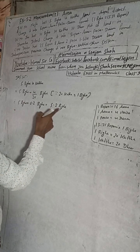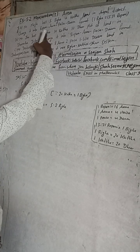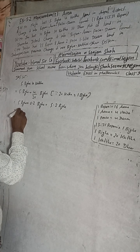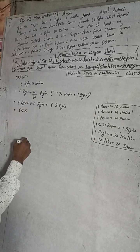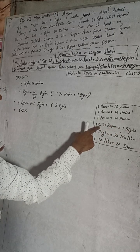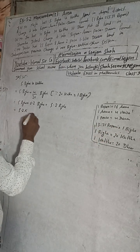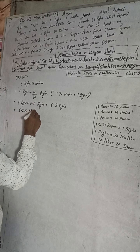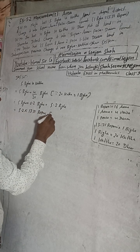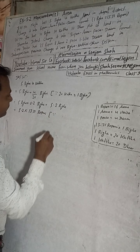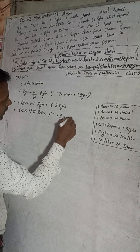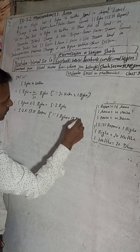Now convert this biga into ropani. We have to multiply 5.2 into 13.31, because 1 biga is equal to 13.31 ropani. So multiplying 5.2 by 13.31 will give us the result in ropani.